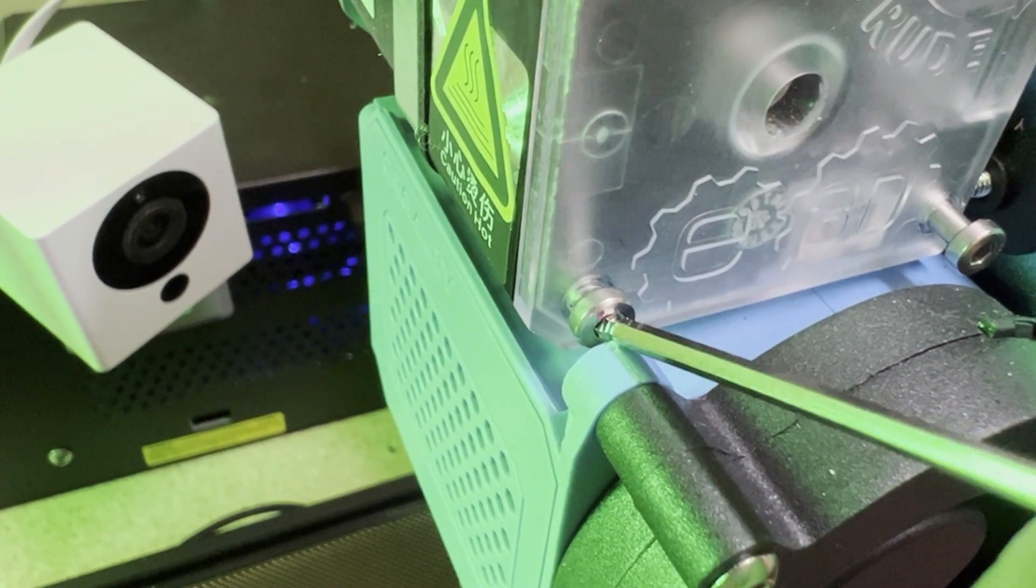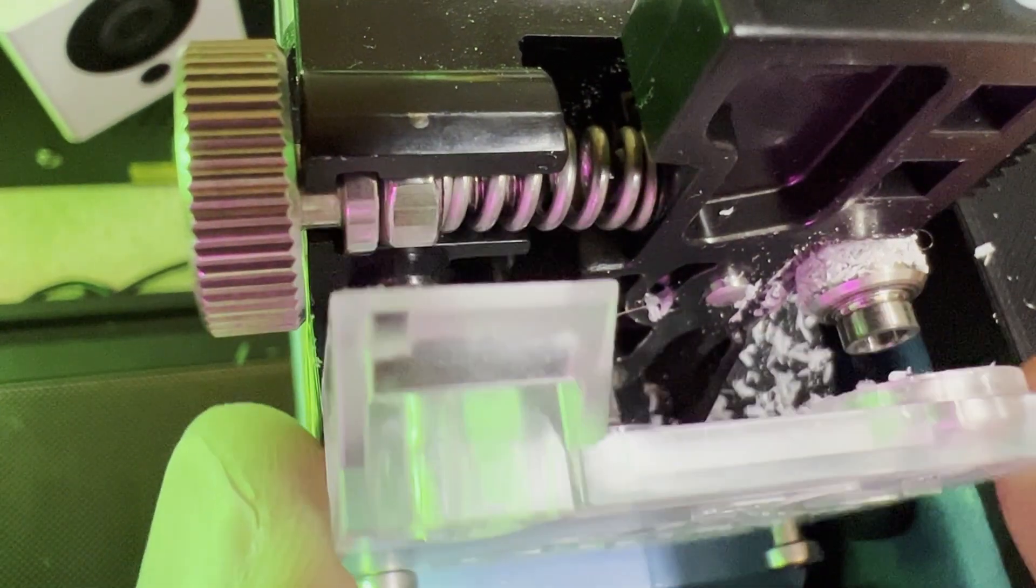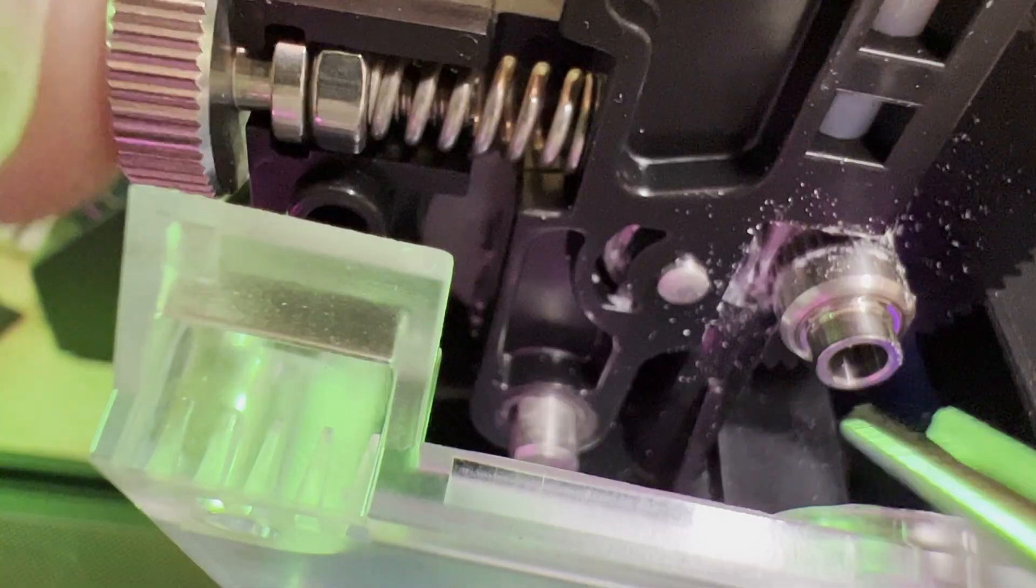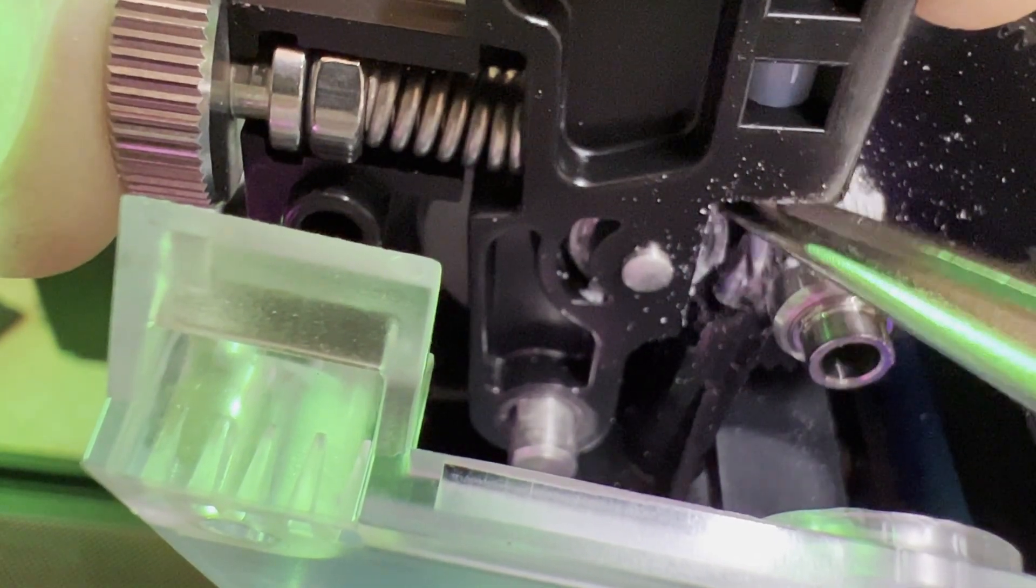You only need to loosen the lower left screw. Now that the other screws are removed, you should be able to access the stuck filament. Gently pull back the clear cover. Here's why we were unable to pull the filament out. It's jammed under the extruder gear.